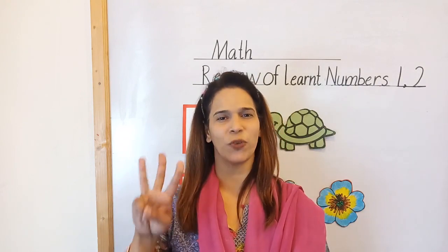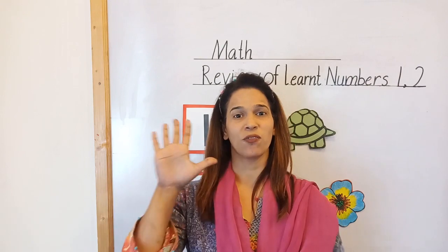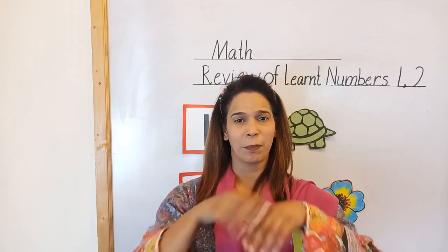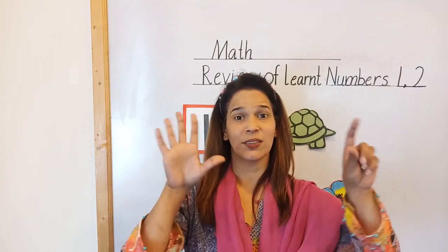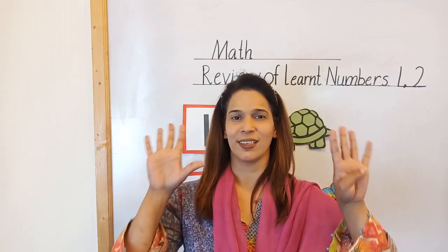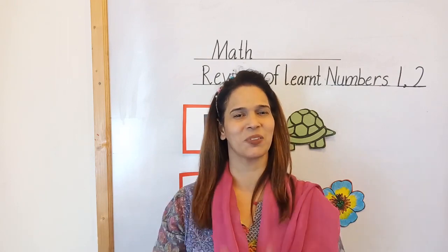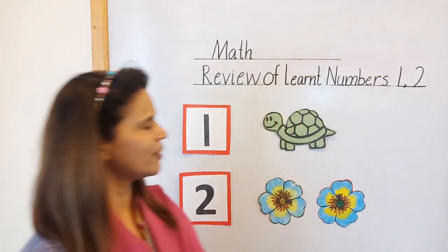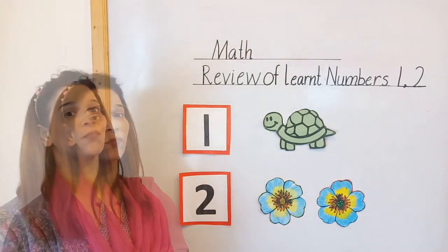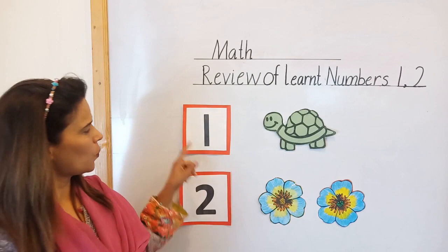shoe, 3, 4, shut the door, 5, 6, pick up the sticks, 7, 8, lay them straight, 9, 10, a big fat hen. Yes, very good! Okay, now let's revise the numbers which we have learnt so far. So which